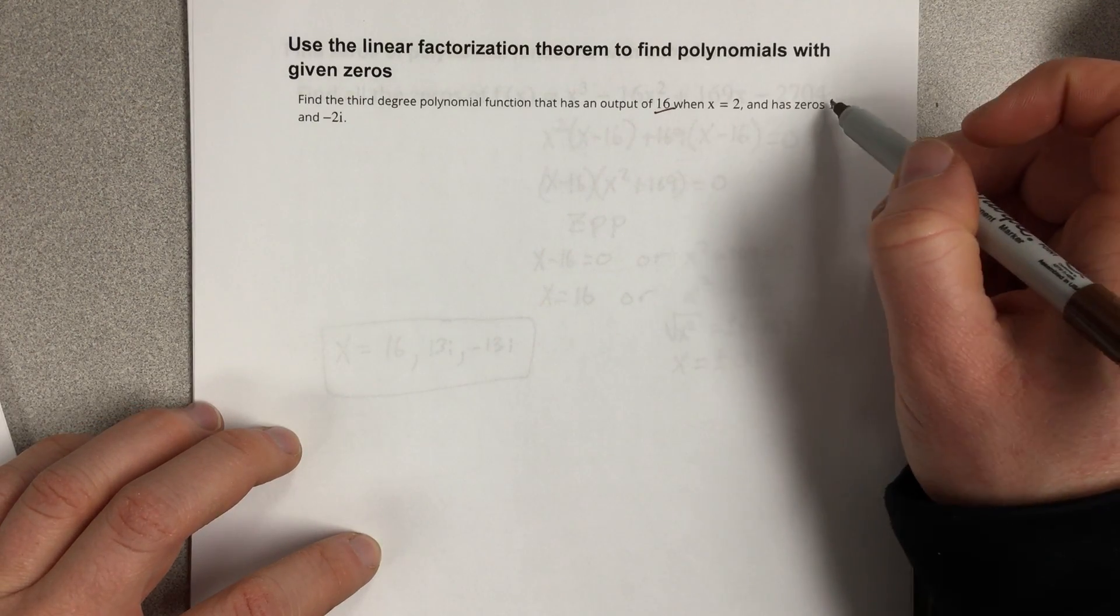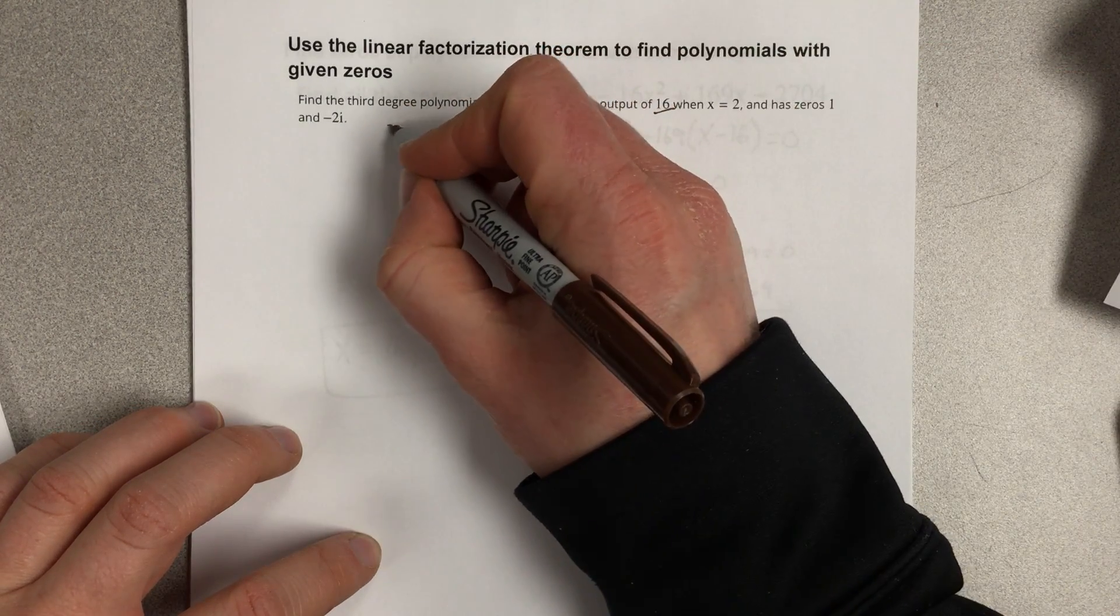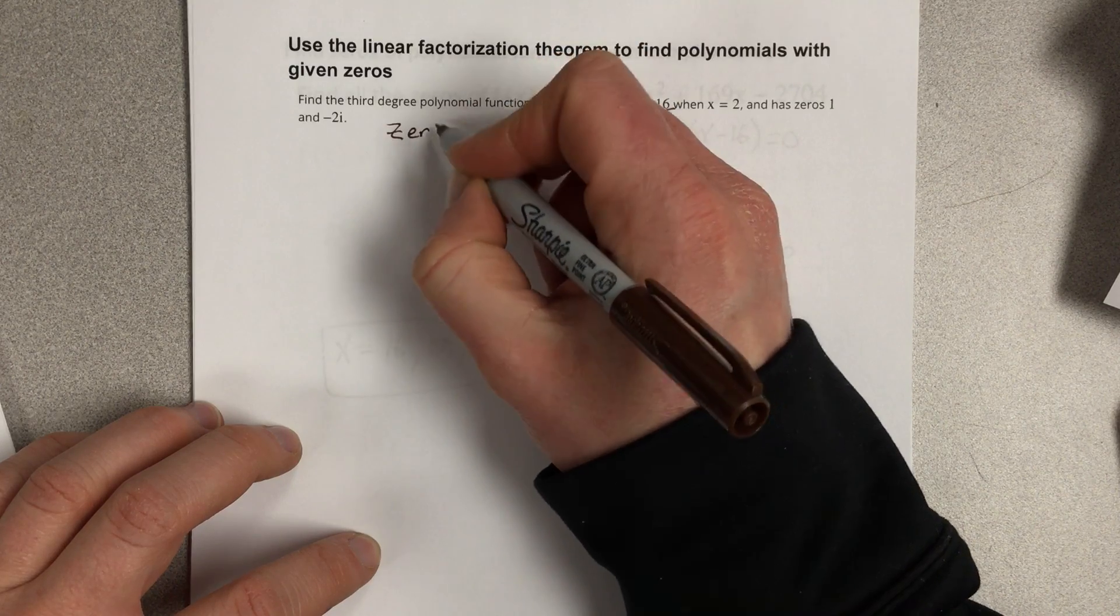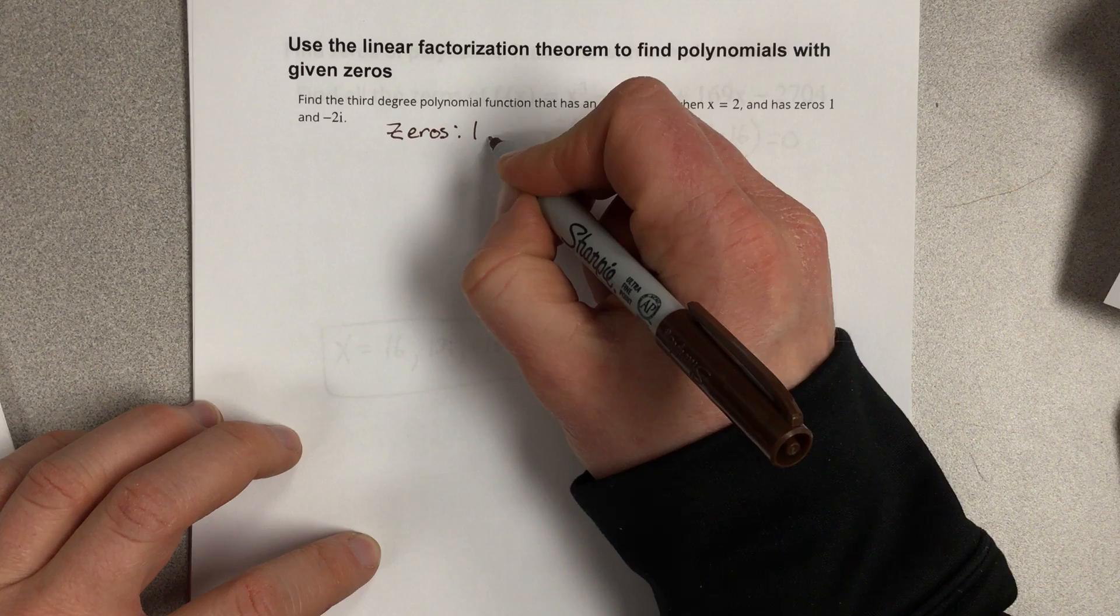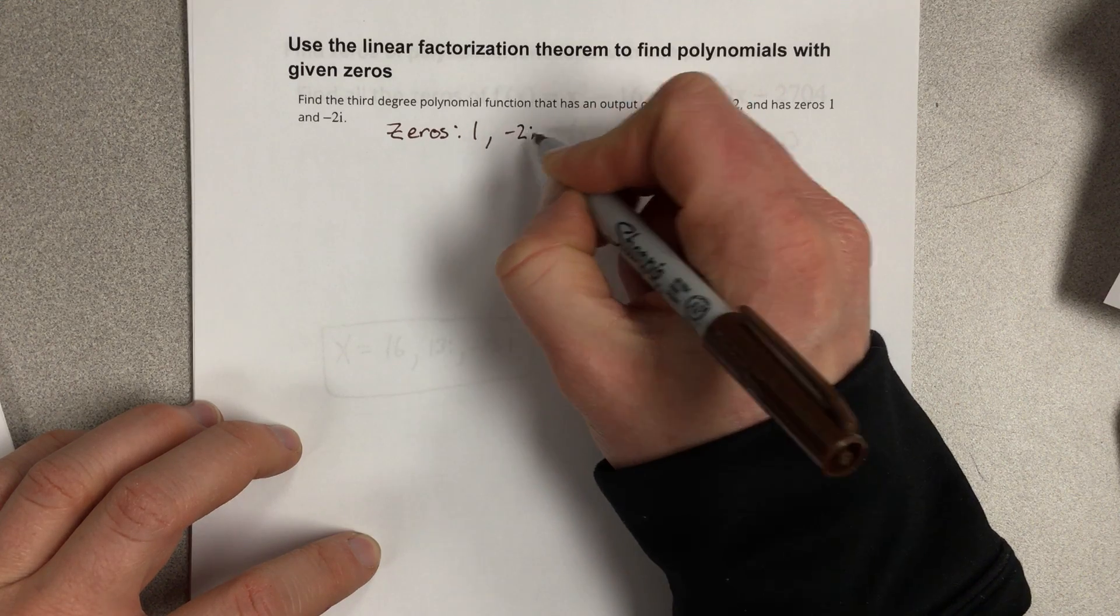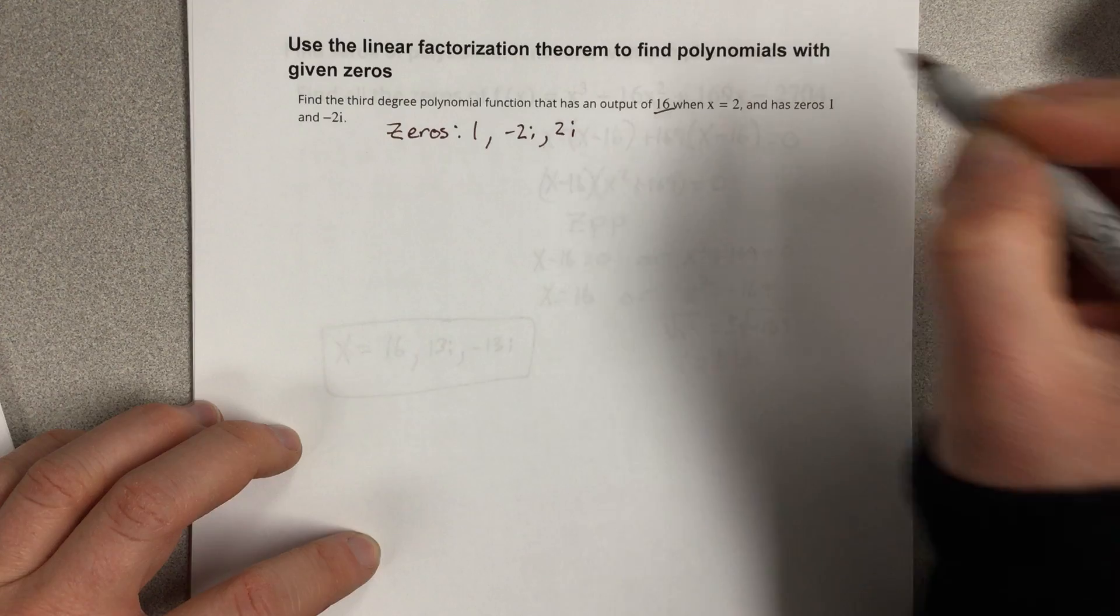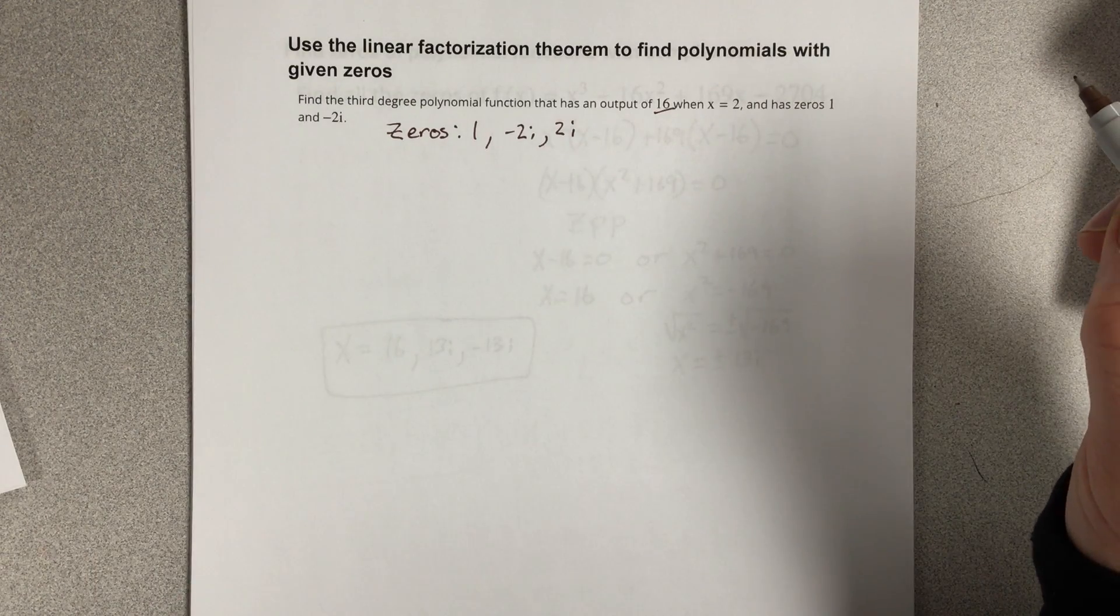First of all, if we have zeros 1 and negative 2i, that means we have three zeros. So our zeros are 1, negative 2i, but if you have an imaginary, you have to have a second imaginary. They always come in pairs. So that would be positive 2i as well.